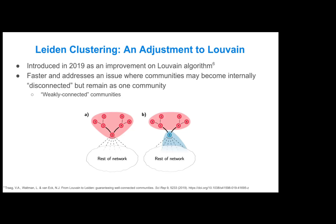The Leiden clustering algorithm was introduced in 2019 as an improvement and extension of the Louvain algorithm to address this problem. It's also worth noting that the Leiden algorithm runs a bit faster than the Louvain algorithm.